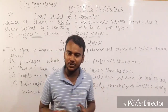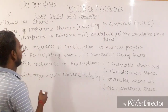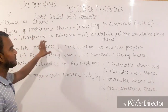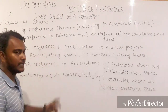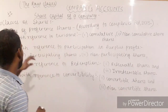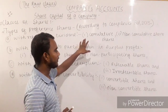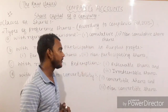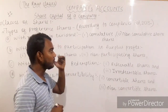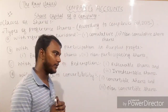Moving forth, we will be discussing about the types of preference shares. According to the Companies Act 2013, preference shares can be classified with reference to dividend into two types: cumulative and non-cumulative preference shares. Cumulative preference shareholders will be given dividend, whereas non-cumulative preference shareholders will never be given dividend out of the profit earned by the company.